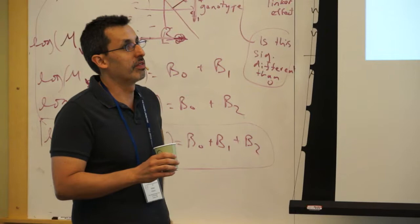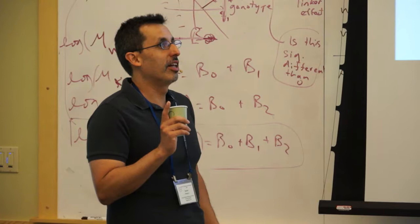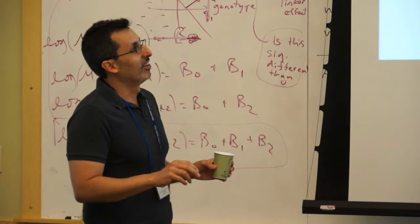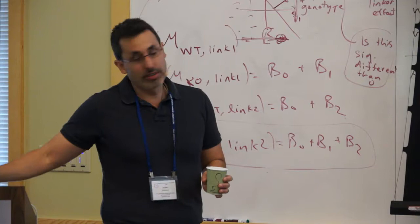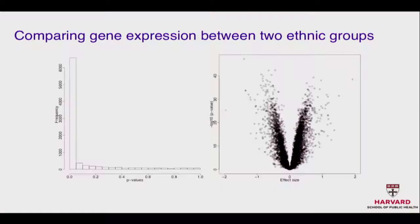So let's talk about confounding in genomics. Here's one example — the data is on the GitHub page. This was a study that compared gene expression between two ethnic groups. When they compared the two groups, they had dozens of samples in each group and did t-tests on each gene.